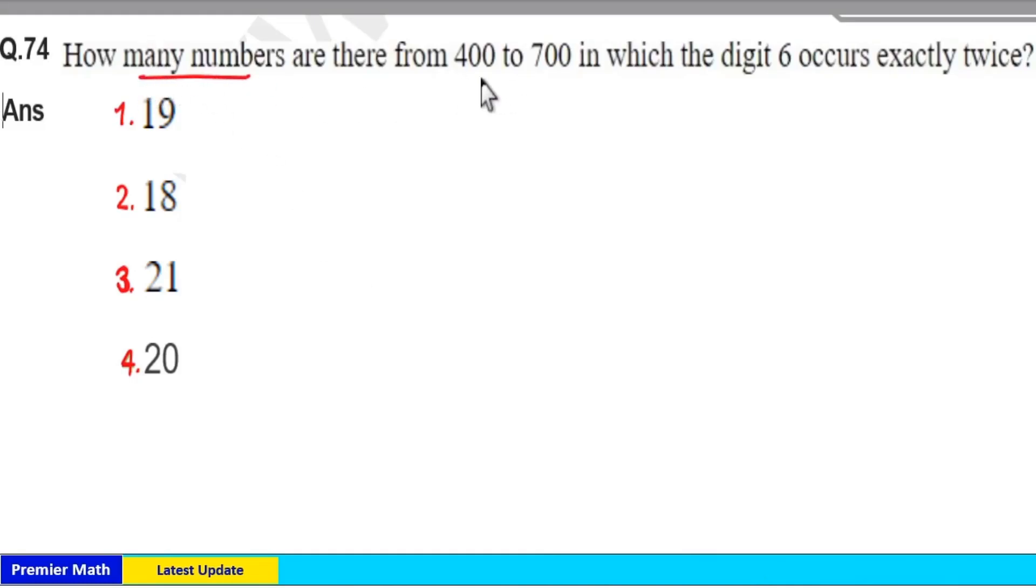How many numbers are there from 400 to 700 in which digit 6 occurs exactly twice? From 400 to 700 means the first digit should be 4, 5, or 6.